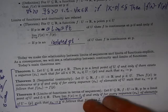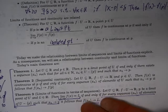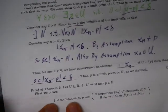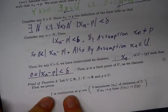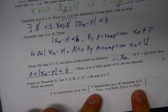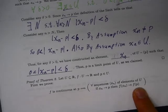We proved half of that theorem. It's an if and only if, so you need to prove both directions. We proved that if f happens to be continuous at p, then for every sequence xn of elements of U, if xn converges to p, then f of xn converges to f of p. We still need to prove the converse.